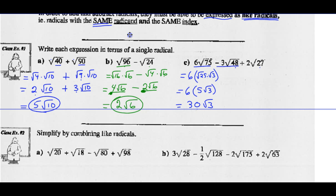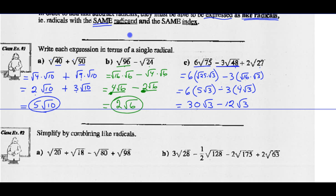Now minus 3 radical 48: we keep the minus 3 and simplify radical 48. We've done that earlier — 48 can be written as 16 times 3, so radical 48 is radical 16 times radical 3. The square root of 16 is 4; we can't take the square root of 3 so we keep radical 3. Multiply negative 3 by 4 and we get minus 12 radical 3. So minus 3 radical 48 is the same as minus 12 radical 3.